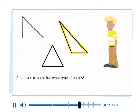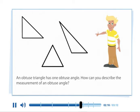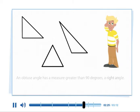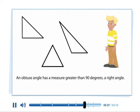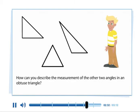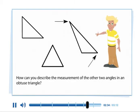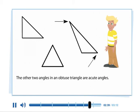An obtuse triangle has a measure greater than 90 degrees, a right angle. How can you describe the measurement of the other two angles in an obtuse triangle? The other two angles in an obtuse triangle are acute angles.